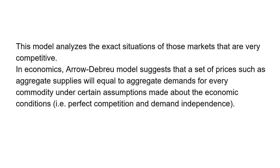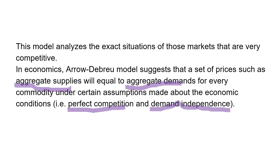This model suggests that prices are such that aggregate supply will equal aggregate demand for every commodity. For this to happen, certain market conditions must be satisfied — specifically perfect competition and demand independence. When you have these two conditions, aggregate supply and aggregate demand for every commodity can be made equal.